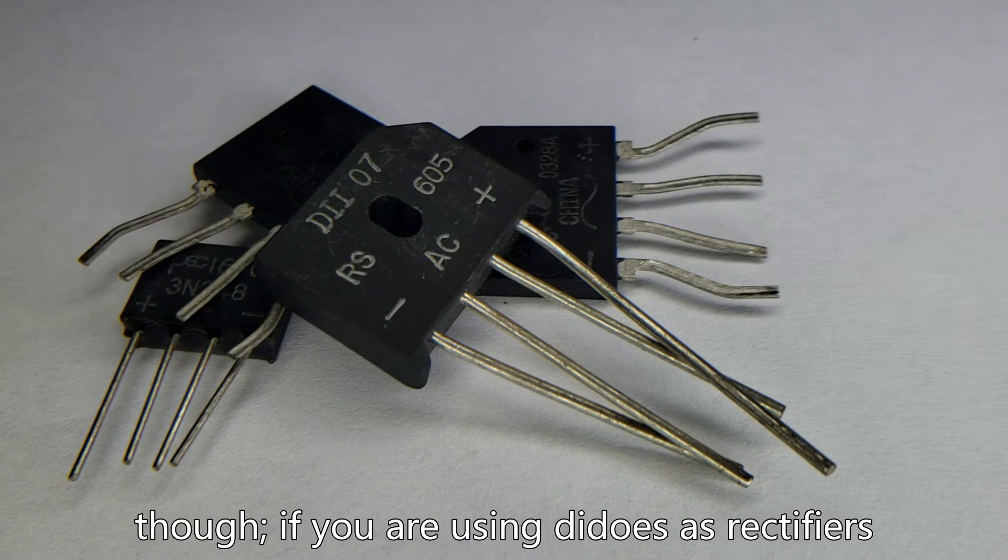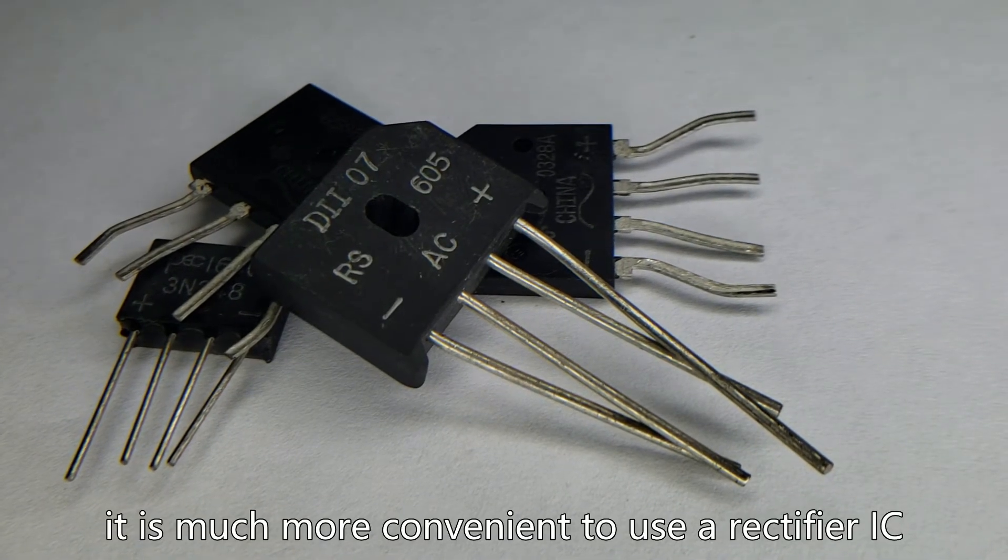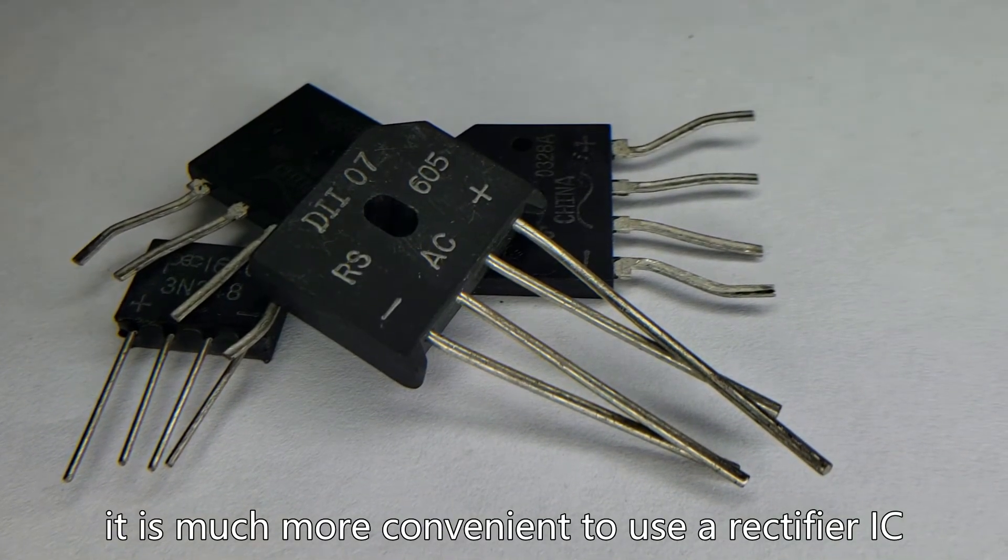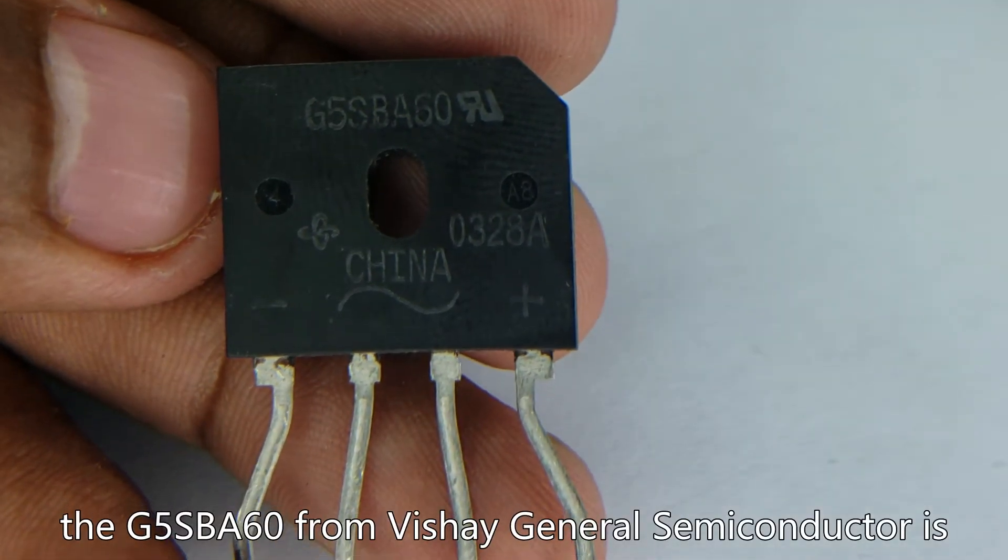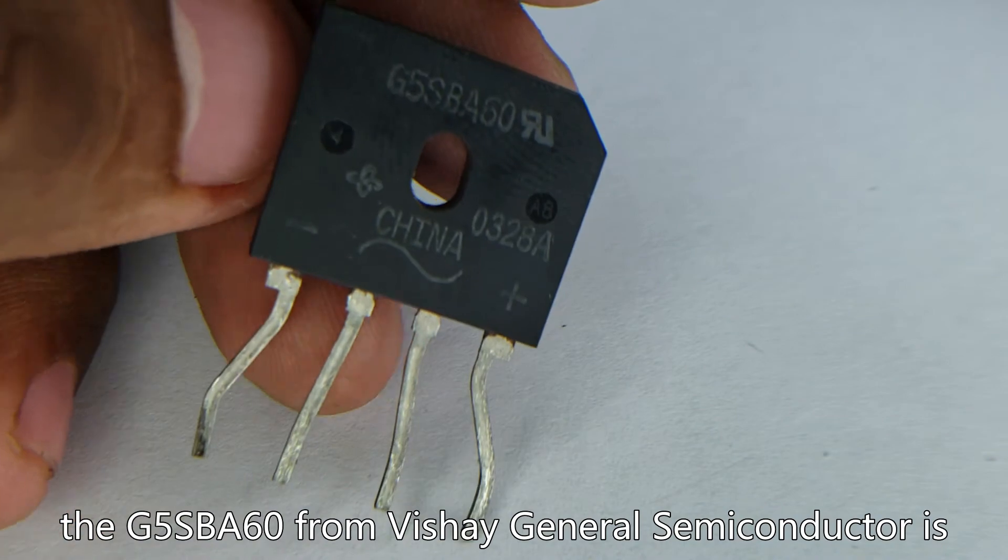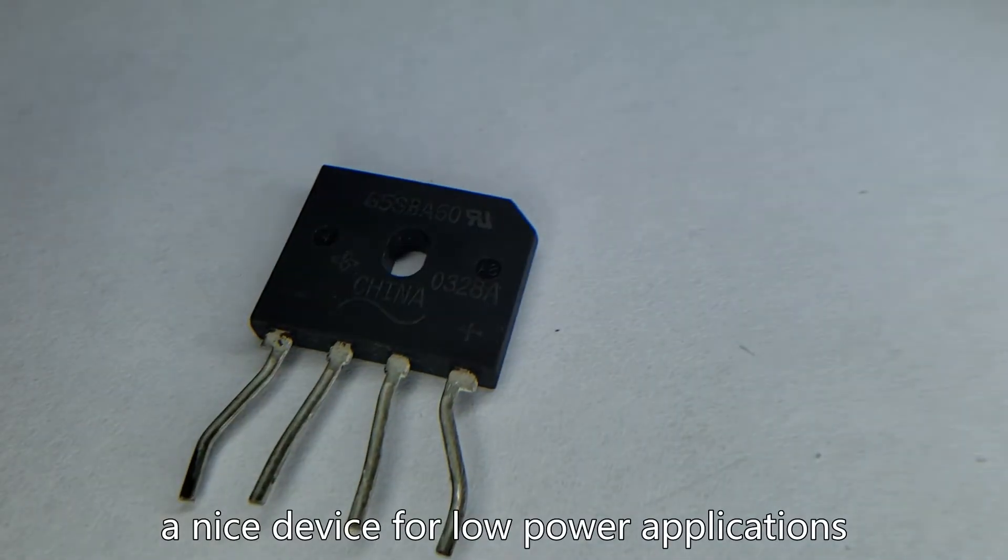Though, if you are using diodes as rectifiers, it is much more convenient to use a rectifier IC. The G5S-BS60 from V-Shade General Semiconductor is a nice device for low power applications.